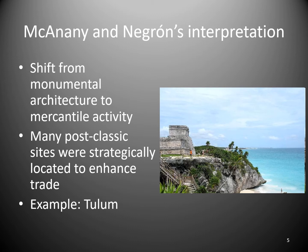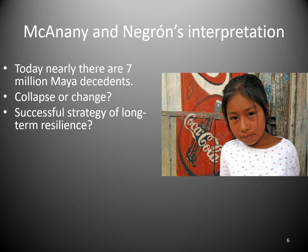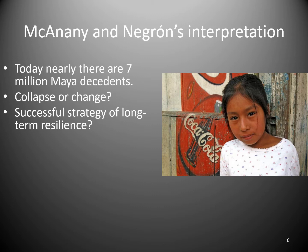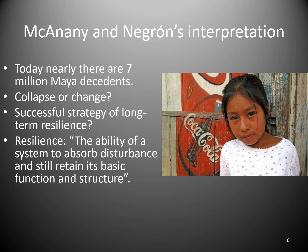New architectural forms and settlement locations reflecting increasing trade activity started to pop up. The depopulation in the south that Diamond cites as evidence of collapse coincides with population increases in the north, which is more coastally oriented — it makes sense that post-classic Maya sites would be located there. McAnany and Negron give the example of Tulum. Today there are nearly 7 million Maya still alive — is that collapse? They changed. Instead of representing environmental degradation, they represent a successful strategy of long-term resilience. They were not passive victims; they reacted and adapted to the environment around them.